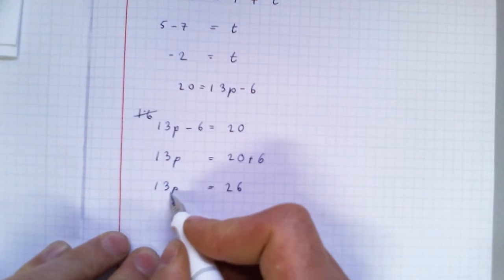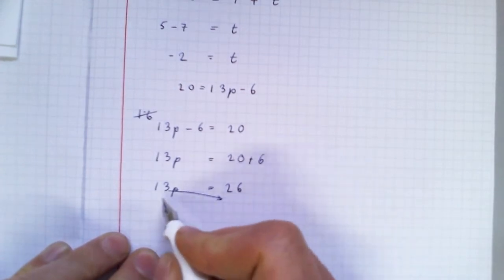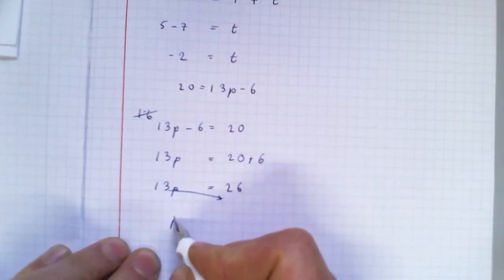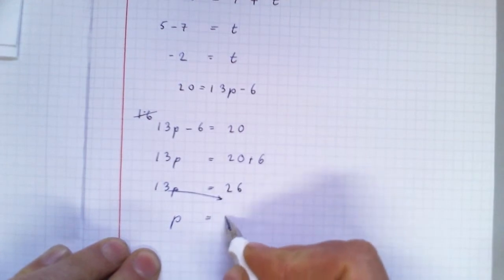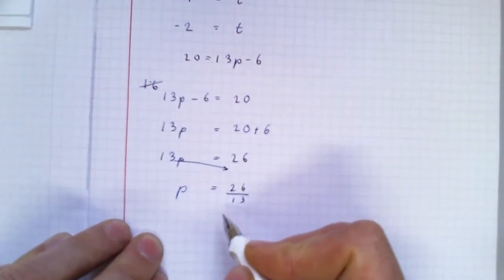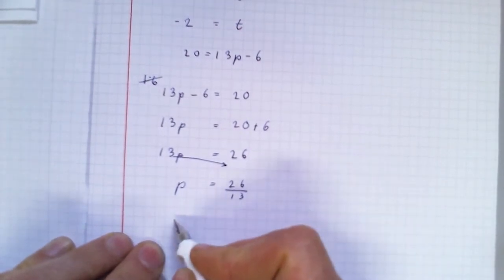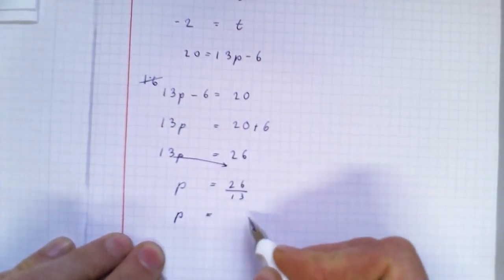I'm going to cross multiply. So multiply becomes divide. P equals 26 over 13. And that's 2 thirteens in that. So p equals 2.